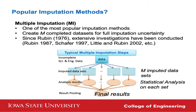In terms of theory and tools, we have very powerful methods. One of the most popular imputation methods is so-called multiple imputation. In short, it creates multiple completed datasets to fully capture imputation uncertainty. Since the initial work by Dr. Rubin, extensive investigation has been conducted, and there are a multitude of variants of this work. It is a well-established method.